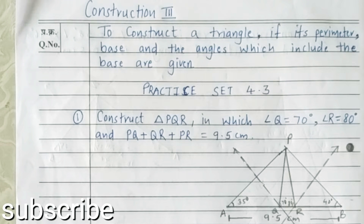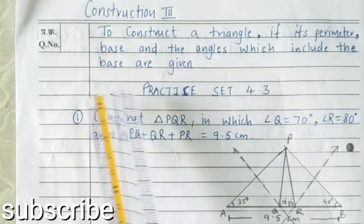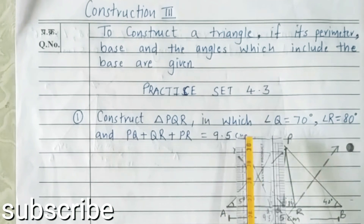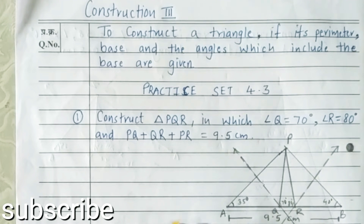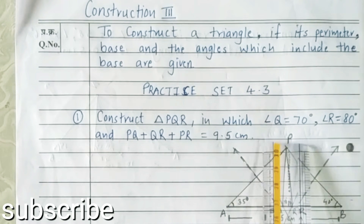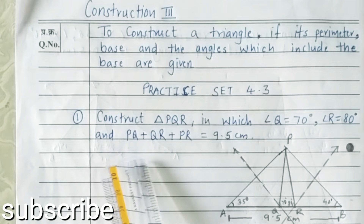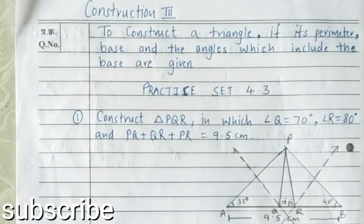Today we will learn the construction of the third type in the chapter 'Construction of a Triangle' — to construct a triangle if its perimeter, base, and the angles which include the base are given. Practice Set 4.3, first example: construct triangle PQR in which angle Q is equal to 70 degrees, angle R is equal to 80 degrees, and the perimeter PQ plus QR plus PR is equal to 9.5 cm.